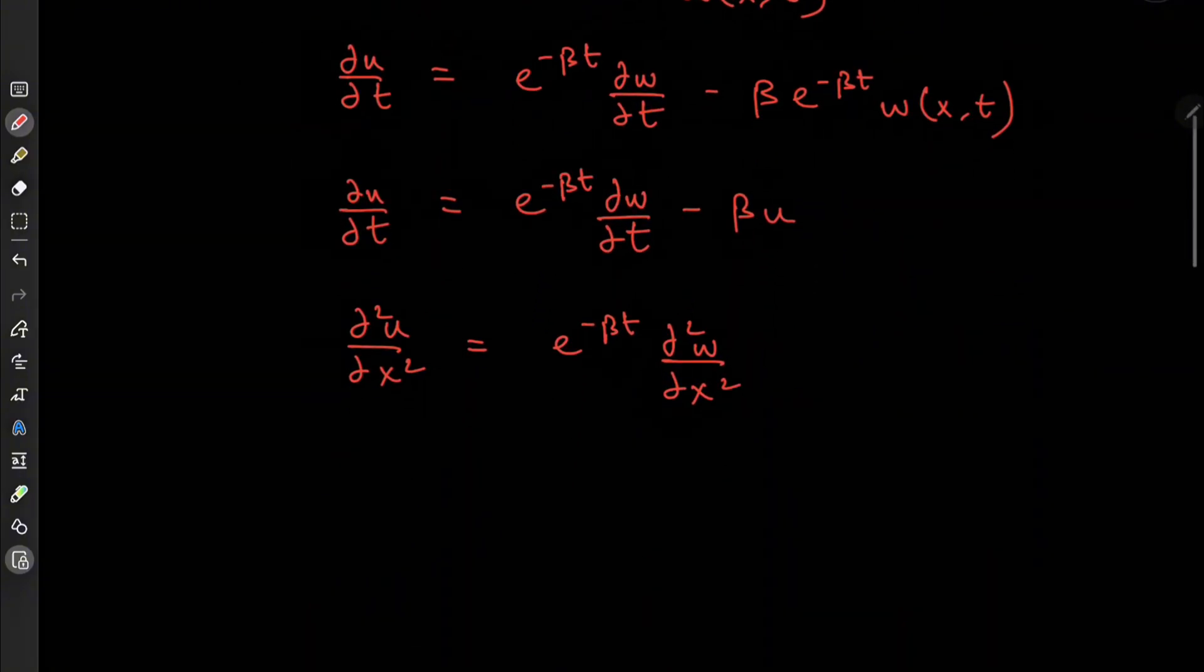So now if I insert these terms back into our heat equation, then we get on the left hand side the derivative, the time derivative, sorts out to e to the minus beta t, terribly sorry about that, times partial w over partial t minus beta u.